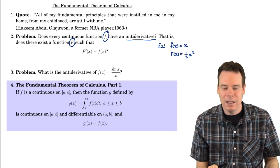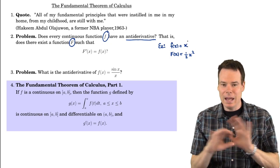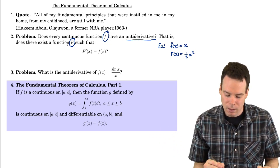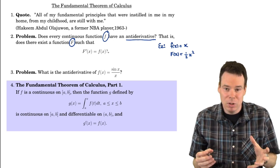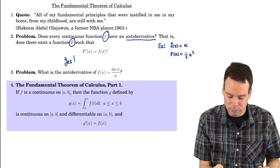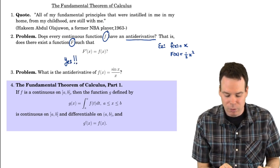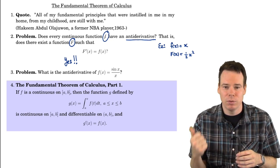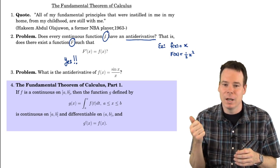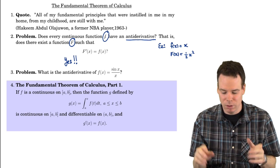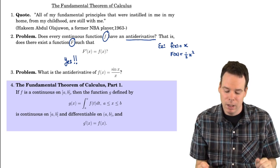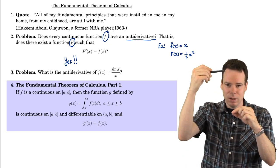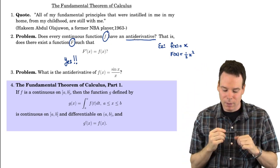This question is asking: suppose you start with any continuous function, little f — does there exist an anti-derivative? It turns out the answer is yes, and that might be surprising. Because if we ask whether every continuous function has a derivative, the answer is no — the absolute value function is continuous but not differentiable. But here we're asking about anti-derivatives, and the answer turns out to be yes.